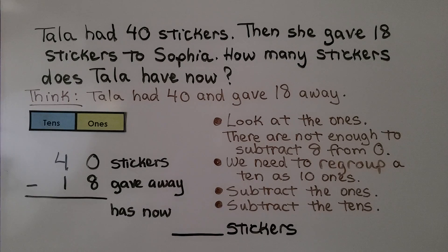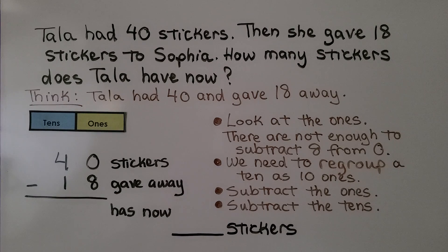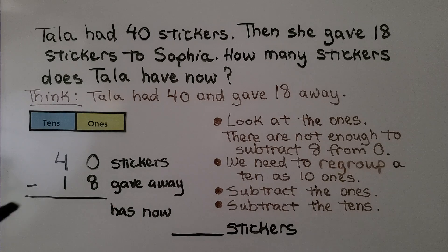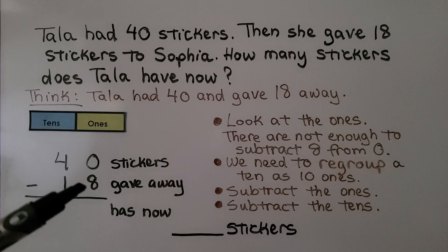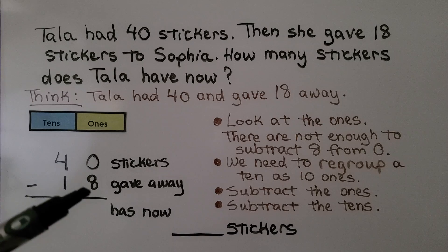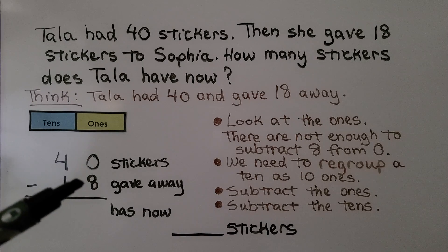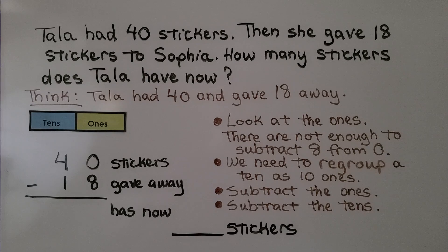Tala had 40 stickers. Then she gave 18 stickers to Sophia. How many stickers does Tala have now? We think: Tala had 40 and gave 18 away, so that means we have 40 minus 18. When we look at the ones place, there are 8 ones in the subtrahend. Can we take 8 ones away from 0 ones? No — there's not enough to subtract 8 from 0.